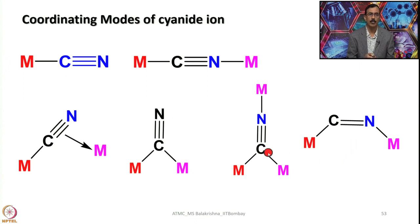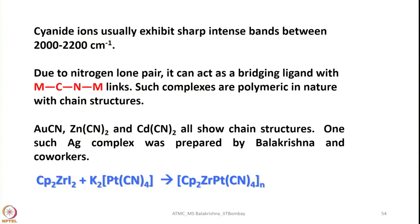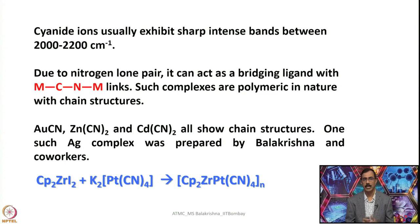These are some of the important coordinating modes of cyanide ion. How to characterize cyanide complexes to confirm that we have cyanide and it has a particular type of coordination mode, that comes from analytical and spectroscopic data, the important one is IR. IR shows a sharp intense band between 2000 to 2200 wavenumber due to C-N stretch. Due to nitrogen lone pair it can act as a bridging ligand with M-C-N linkages. Such complexes are polymeric in nature with chain structures, one such example I showed you that one is Prussian blue and gold cyanide, zinc cyanide and cadmium cyanide all show chain structures.